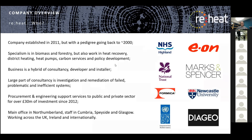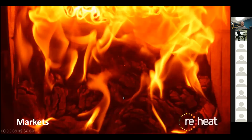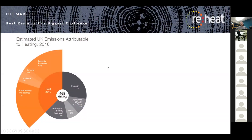The markets we're focusing on today are driven by the fact that heat remains our single biggest challenge in reducing carbon emissions. Even though 37% of UK emissions are attributable to heat, only around 7% of those today come from renewables. There's a huge amount of space heating, hot water production, cooling, and industrial processes which need to be tackled with renewable sources of heat, and biomass is currently the leader among deployed renewables in that 7%.